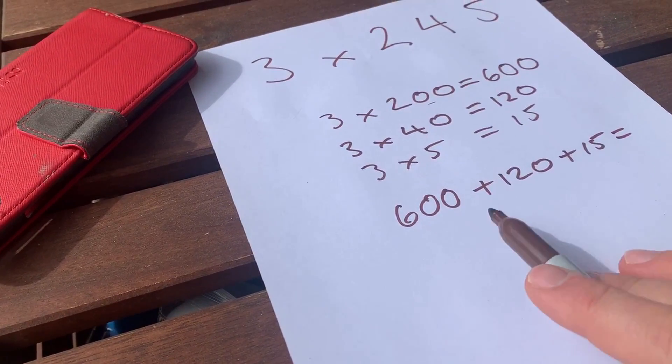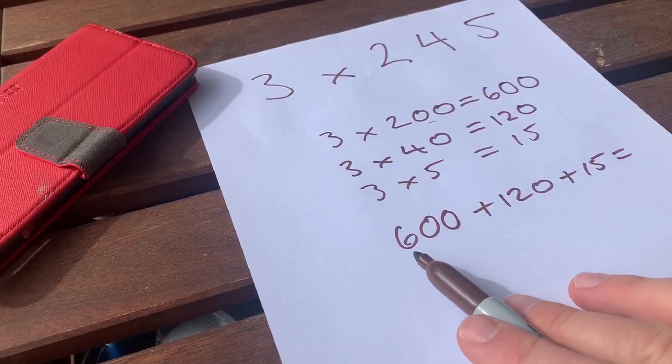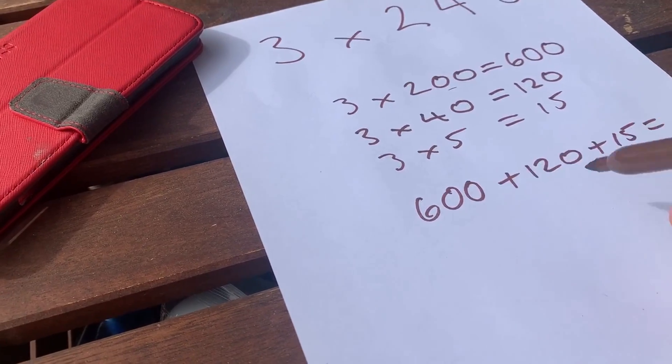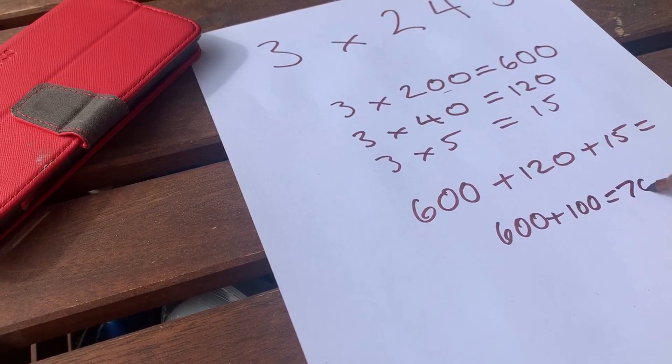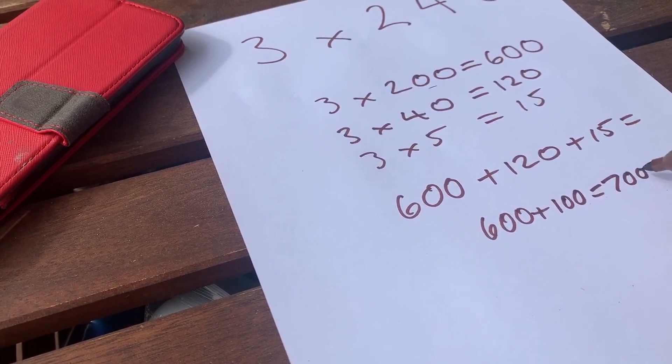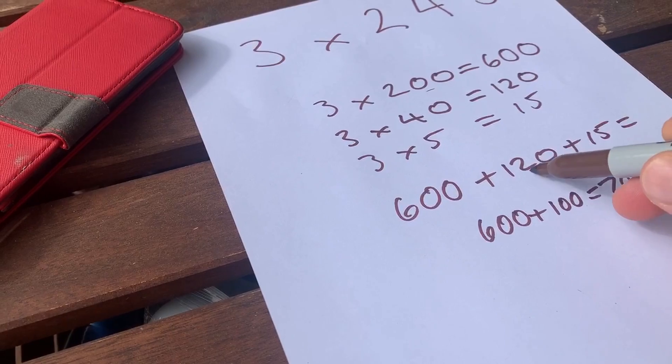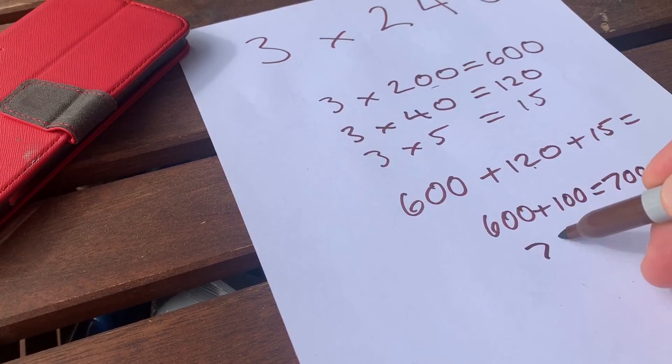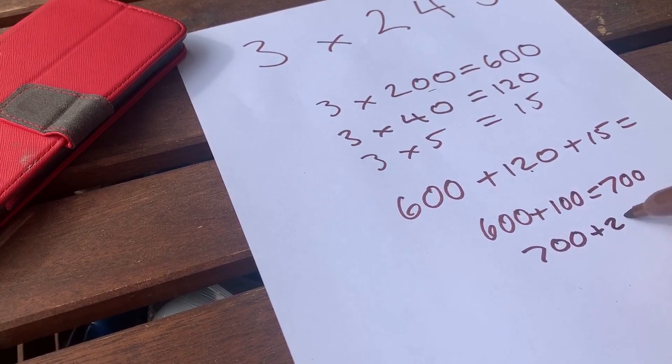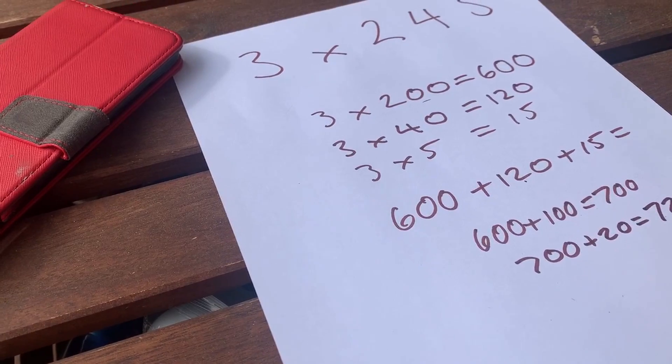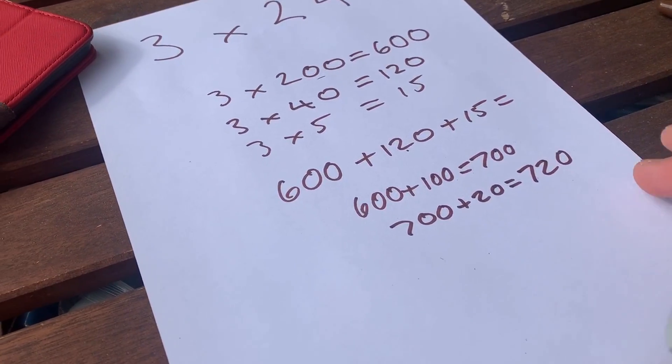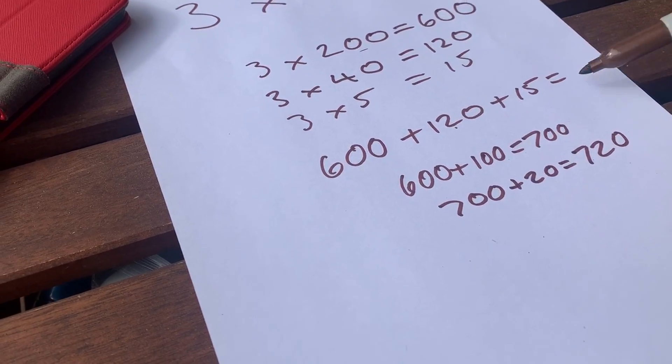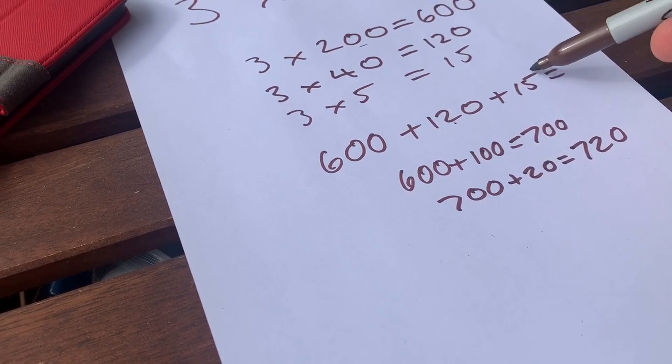Now I'm going to add these three together. And this is quite big. I might say, well, I know 600 plus 100 is 700. I know 700 plus 20 is 720. You don't have to go this detailed, guys, but this is just a very in-depth way that I'd think it out. And then I've got 720 plus the 15...